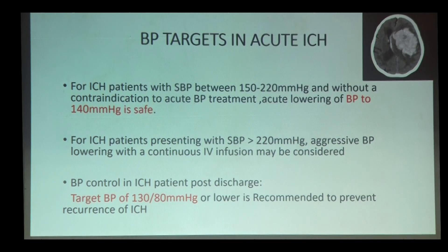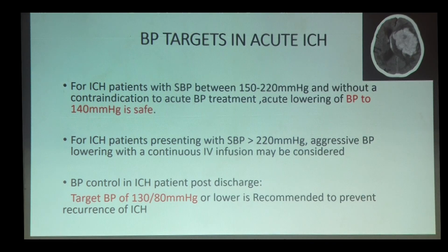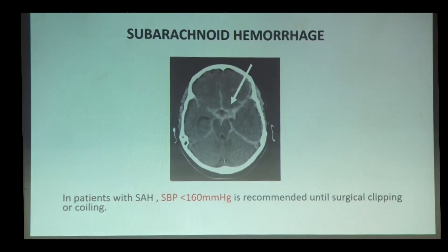In patients with systolic blood pressure of 150 to 220 mmHg, BP should be lowered to around 140 mmHg. On discharge, target BP in ICH patients should be around 130/80 mmHg. In case of subarachnoid hemorrhage, systolic blood pressure should be maintained less than 160 mmHg with a MAP of around 110.